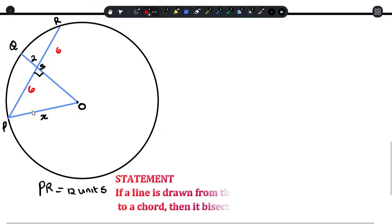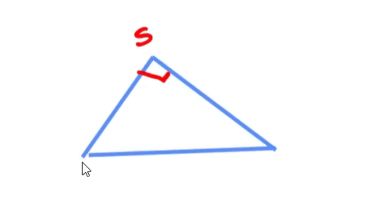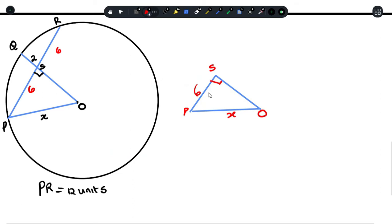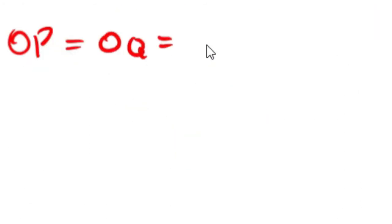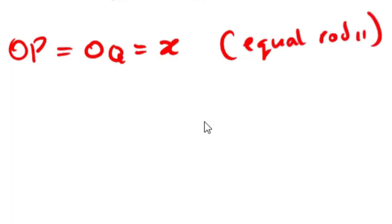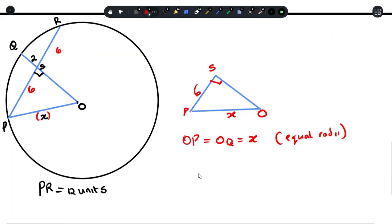The reason for that is perpendicular from center bisects chord. If we extract that triangle from here, this is how it's going to look. But going back to the original circle itself, we understand that our radius OP here is X. And if OP is X, OQ should also be the same. The reason is because they are both radiuses, so they should have equal value.